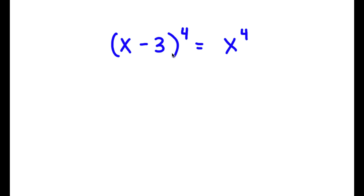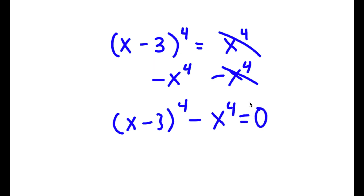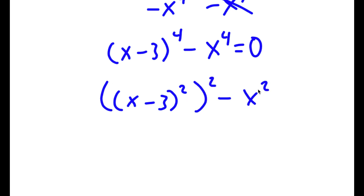In this problem, I have x minus 3 to the power of 4 is equal to x to the power of 4. The first thing I'm going to do is subtract x to the power of 4 on both sides, so now I have x minus 3 to the power of 4 minus x to the power of 4 is equal to 0. I'm going to rewrite this as x minus 3 squared to the power of 2 minus x squared to the power of 2 is equal to 0.